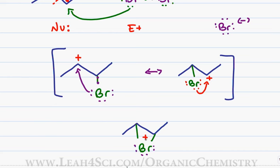Now even though bromine is holding the positive charge, you still have a partial positive on each of the carbons attached to the bromine and this brings us to the next step in the reaction.